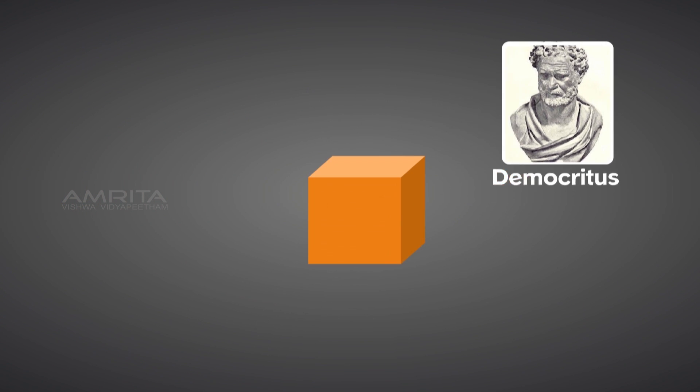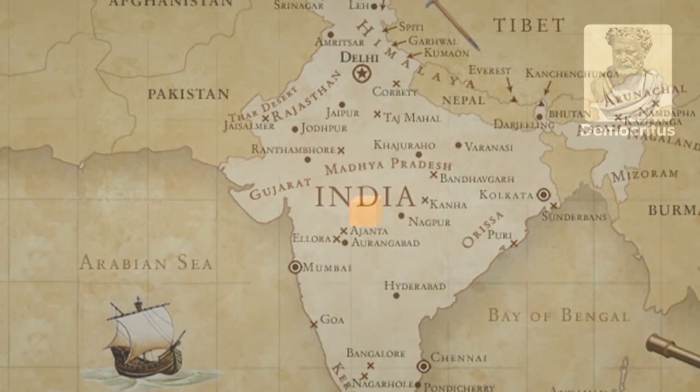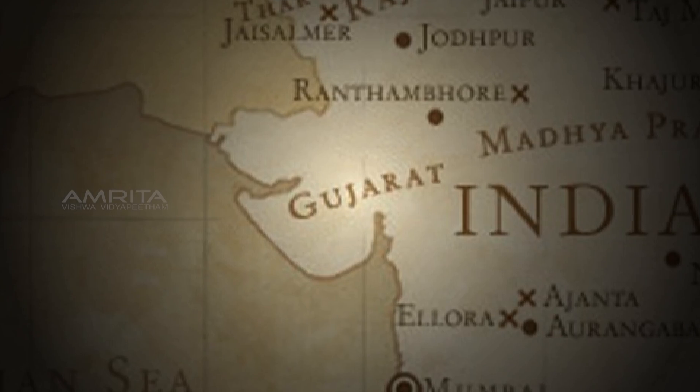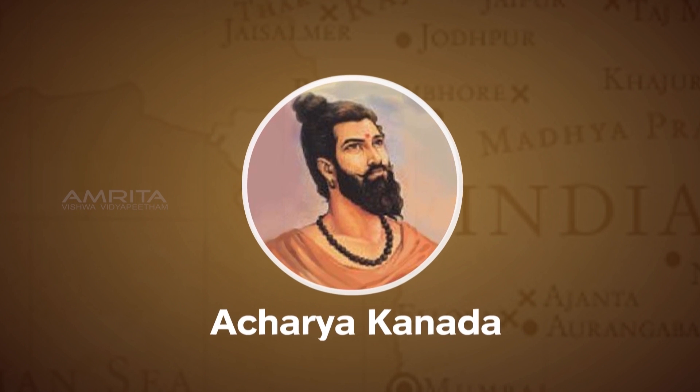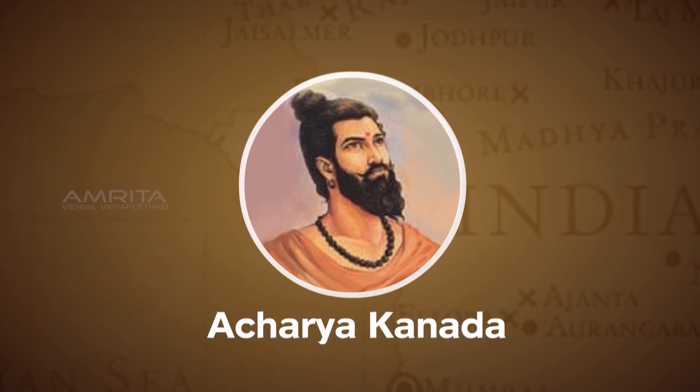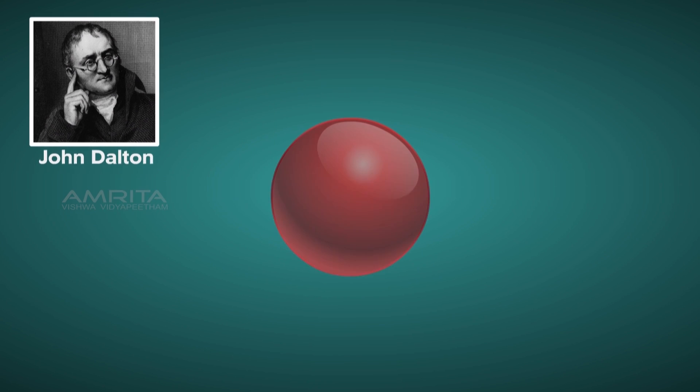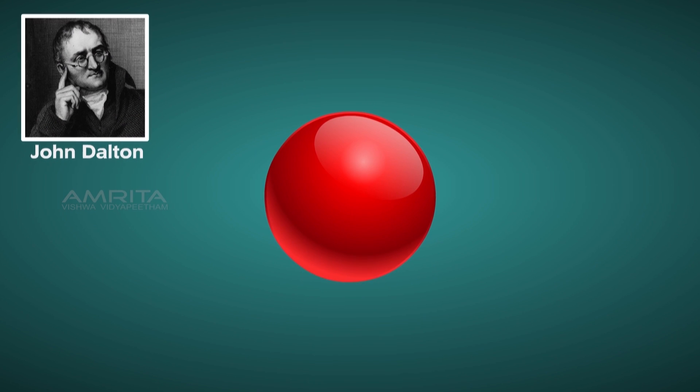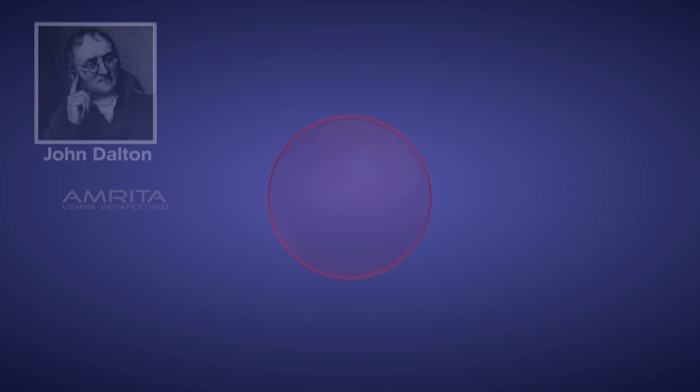Democritus, a Greek philosopher, described the atom as that which cannot be cut up further. Acharya Kannada of India defined atom as eternal and indestructible and which cannot exist in free state. John Dalton proposed that atom was indivisible and indestructible, but this can only be said so if it is not composed of further particles.